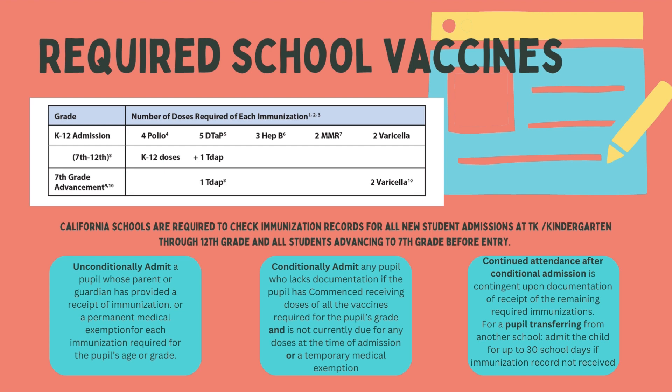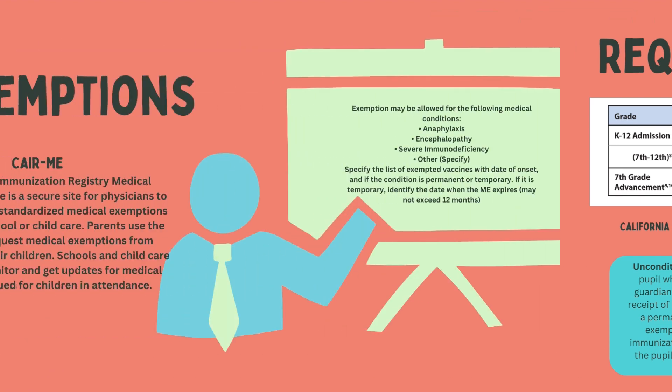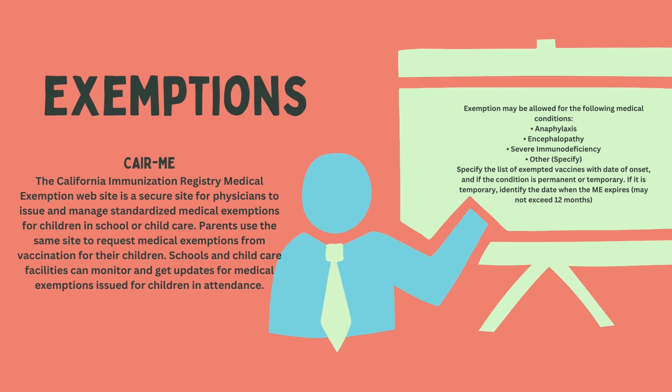California schools are required to check immunization records for all new student admissions at TK/kindergarten through 12th grade, and all students advancing to 7th grade, before entry. Schools may unconditionally admit a pupil whose parent or guardian has provided receipt of immunization or a permanent medical exemption for each required immunization. Schools may conditionally admit any pupil who lacks documentation if the pupil has commenced receiving all required vaccine doses and is not currently due for any doses, or has a temporary medical exemption. For a pupil transferring from another school, admit that child for up to 30 school days if the immunization record has not been received.